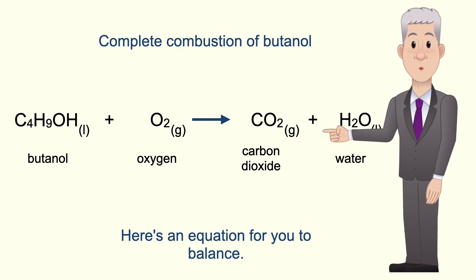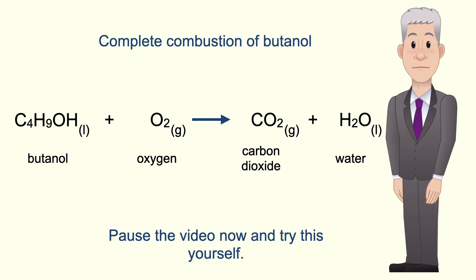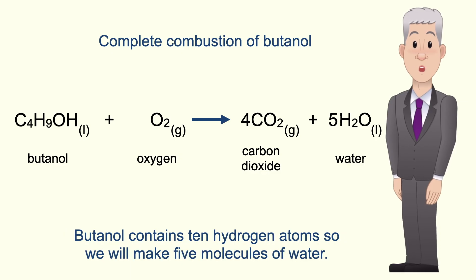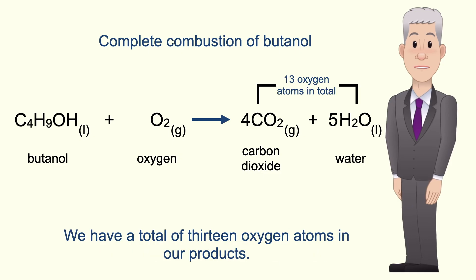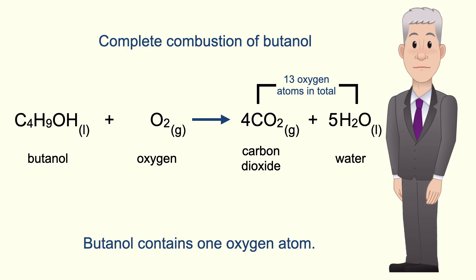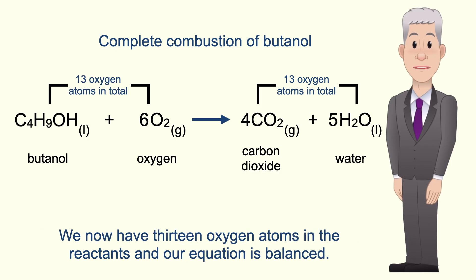Here's an equation for you to balance — the complete combustion of butanol. Pause the video now and try this yourself. Butanol contains four carbon atoms so we'll make four molecules of carbon dioxide. Butanol contains 10 hydrogen atoms so we'll make five molecules of water. We have a total of 13 oxygen atoms in our products, so we need 13 oxygen atoms in the reactants. Butanol contains one oxygen atom, so we need six oxygen molecules to provide the remaining 12 oxygen atoms. We now have 13 oxygen atoms in the reactants and our equation is balanced.